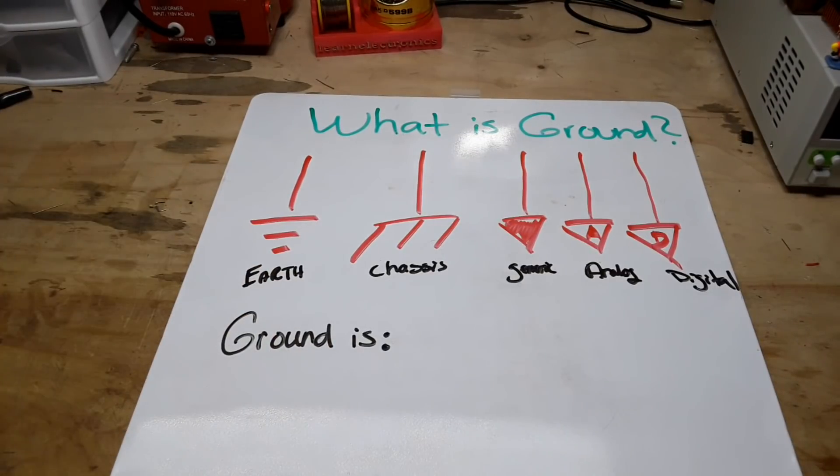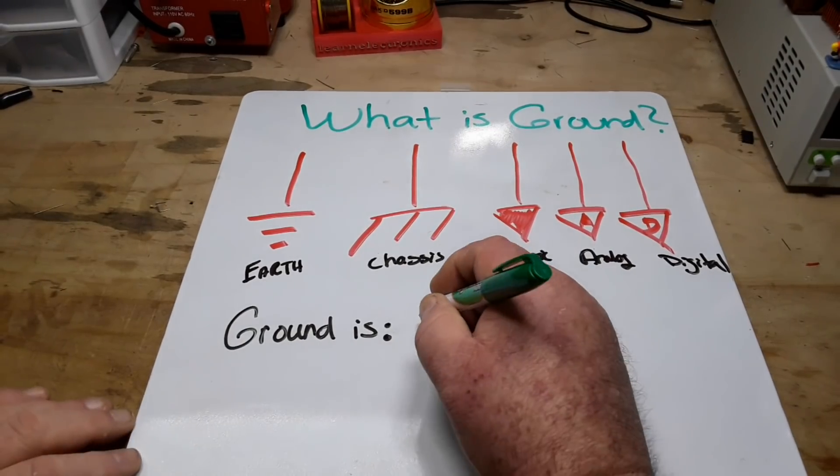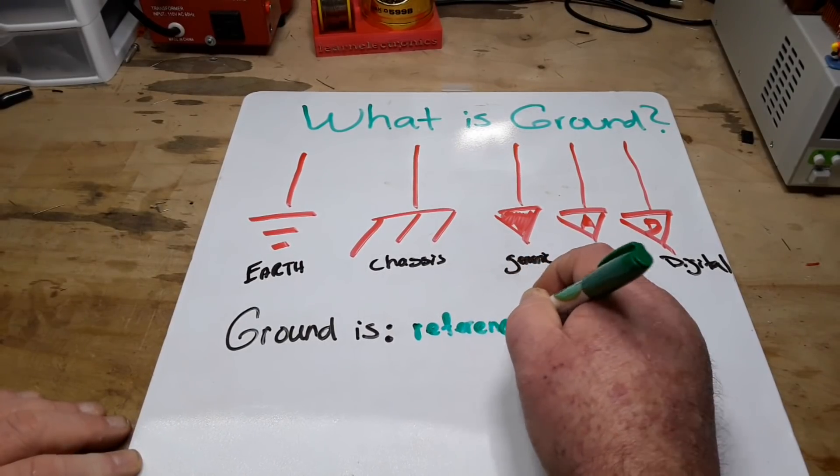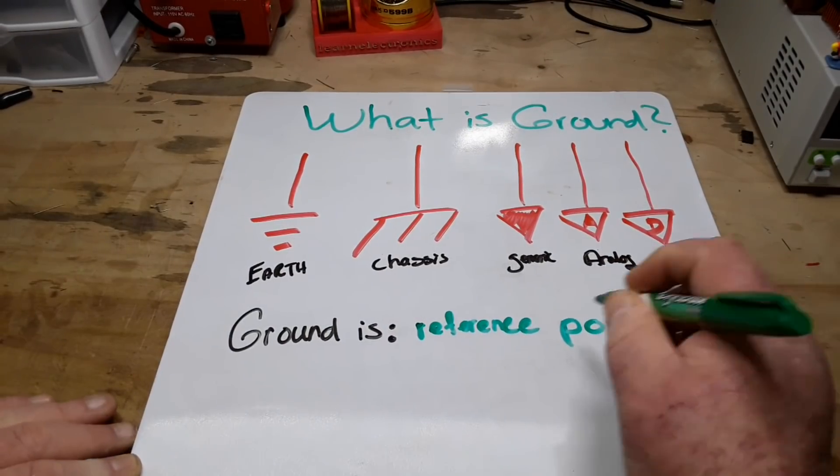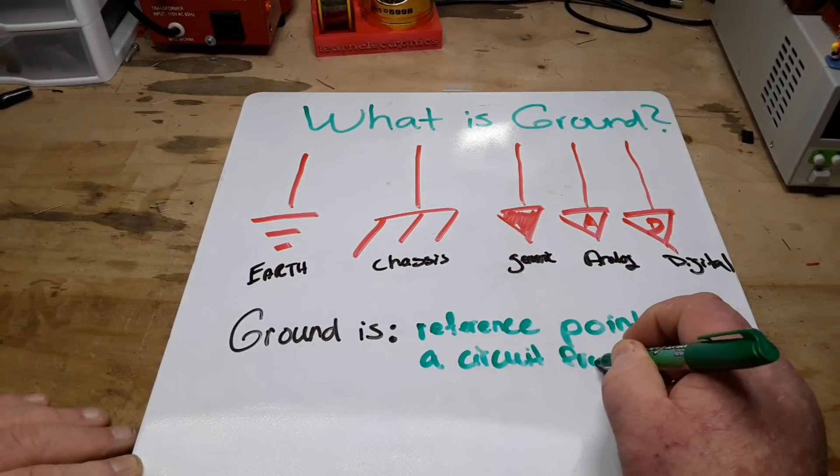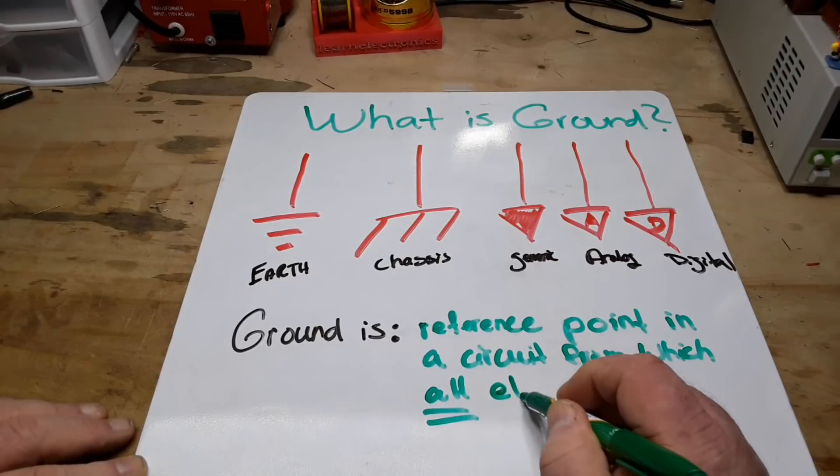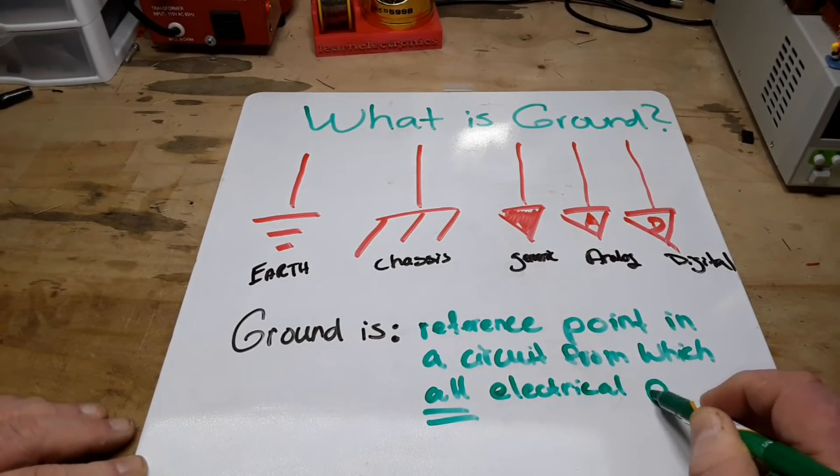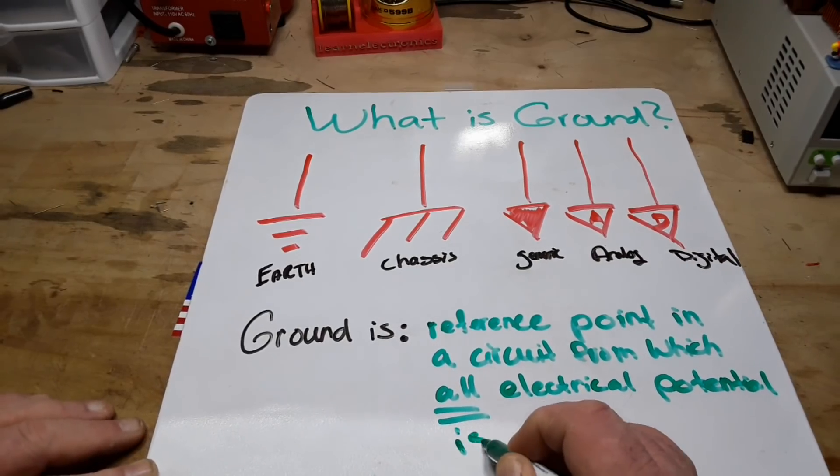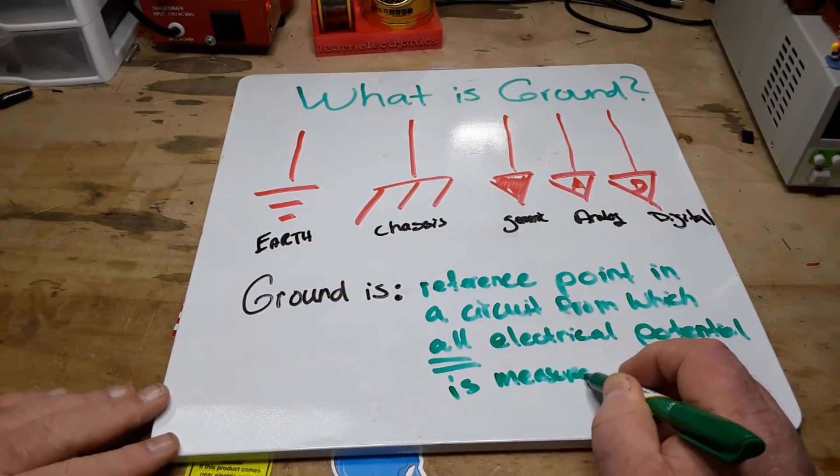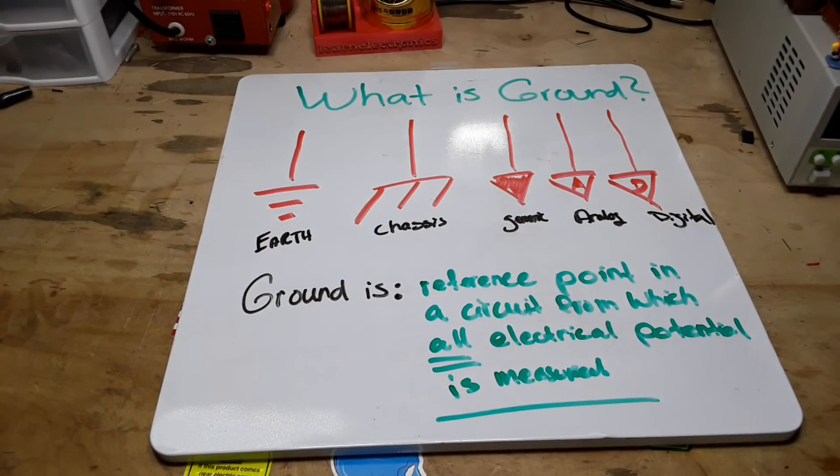Well, first of all, this is my interpretation of ground. It is maybe not exactly what you are going to find in a textbook, but I'm going to get the point across to you so that you understand what I'm talking about. Ground is the reference point in a circuit from which all electrical potential is measured. That is a very good explanation of ground.